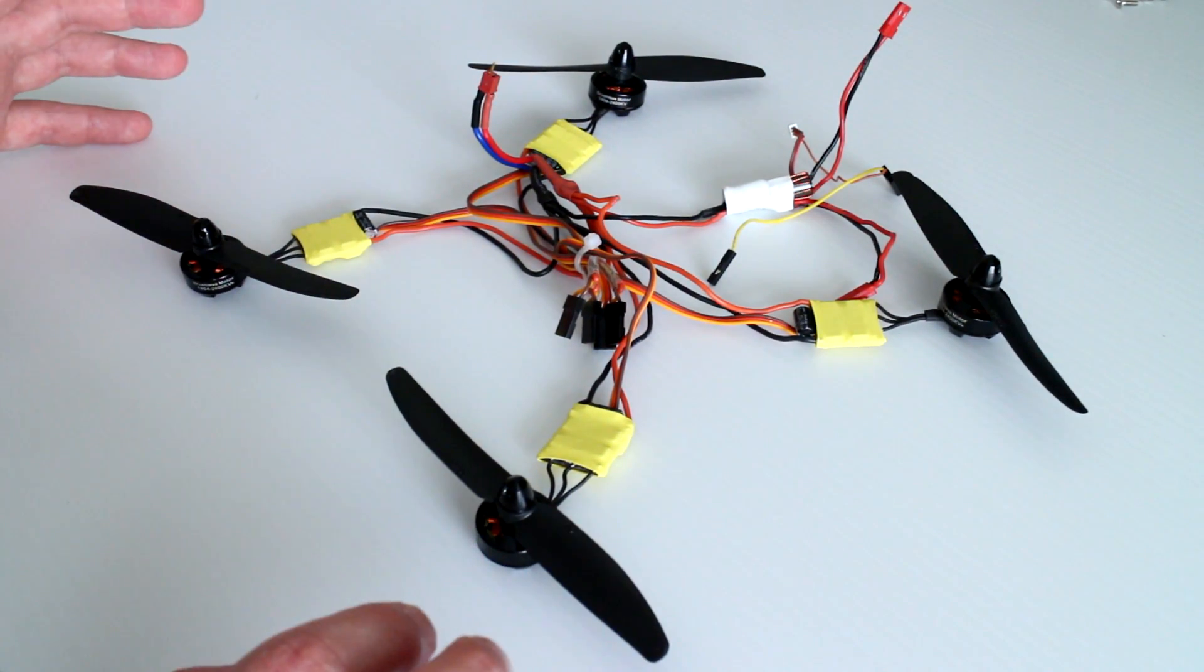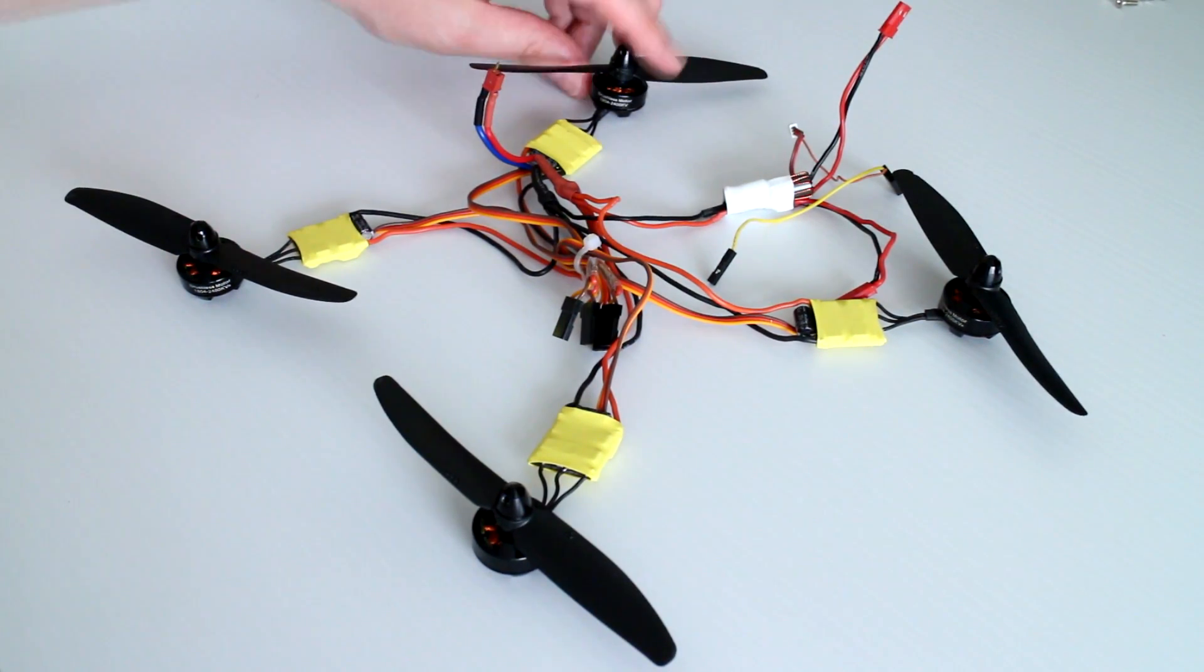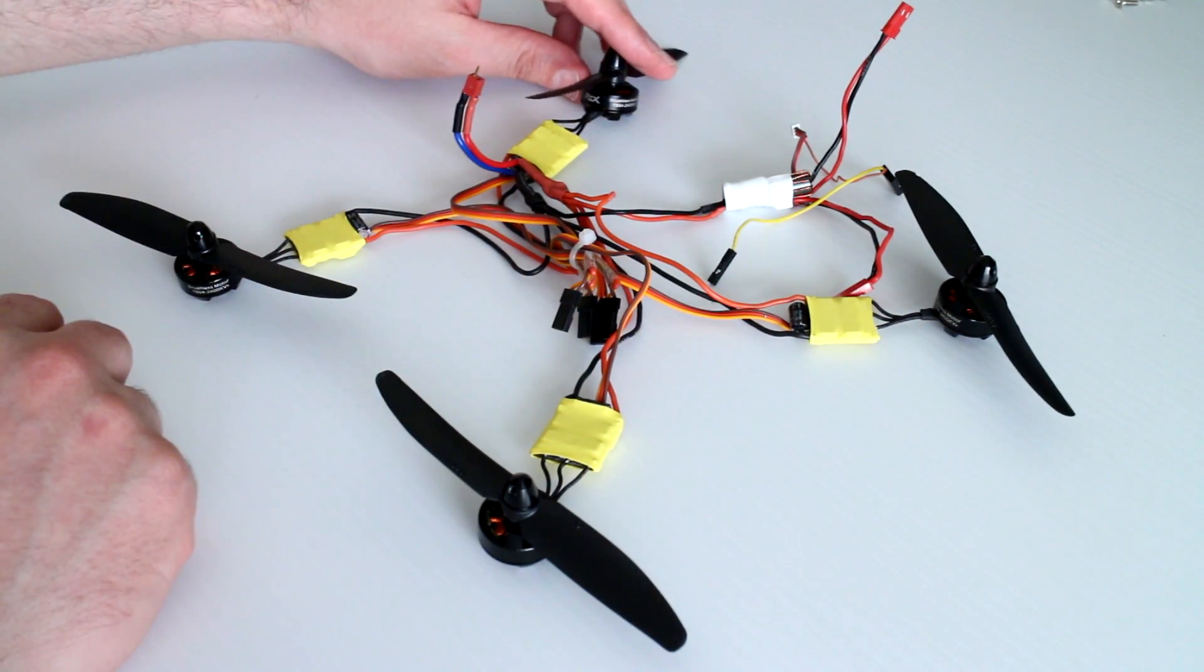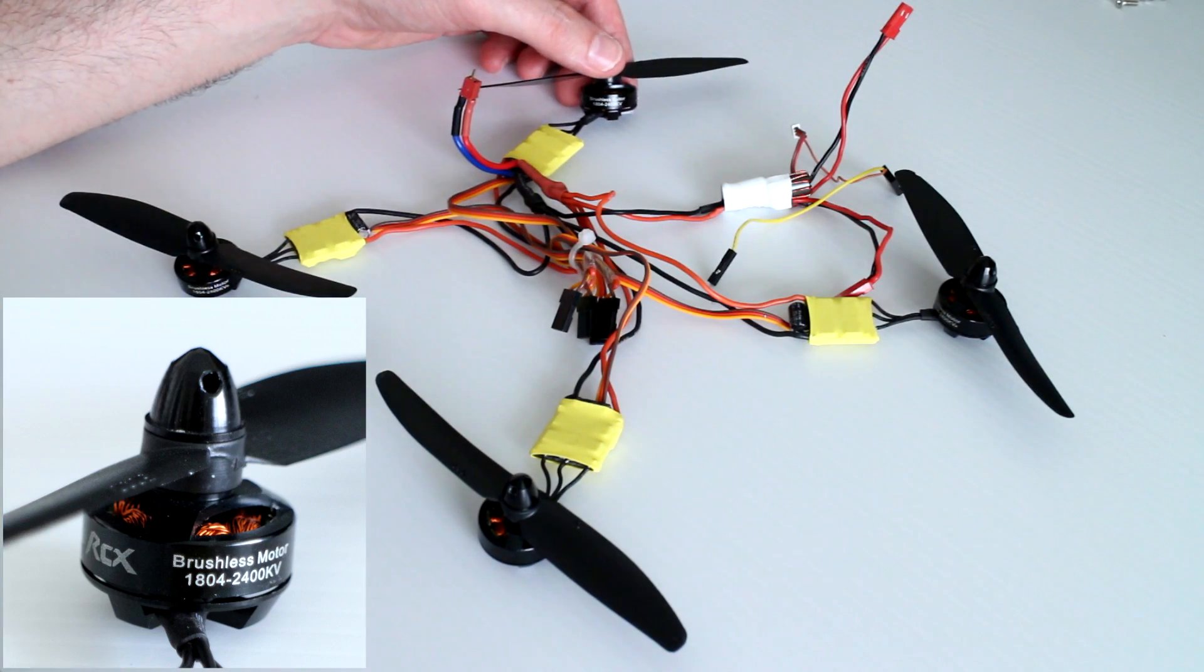In front of us here is the base power system. We have the four brushless motors purchased from MyRCMart. They are the RCX or ZMR branded motors, 1804 2400 kV.